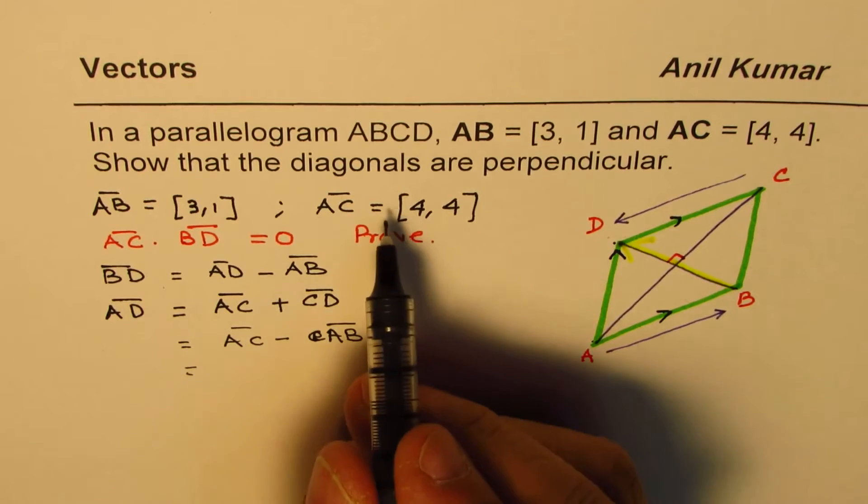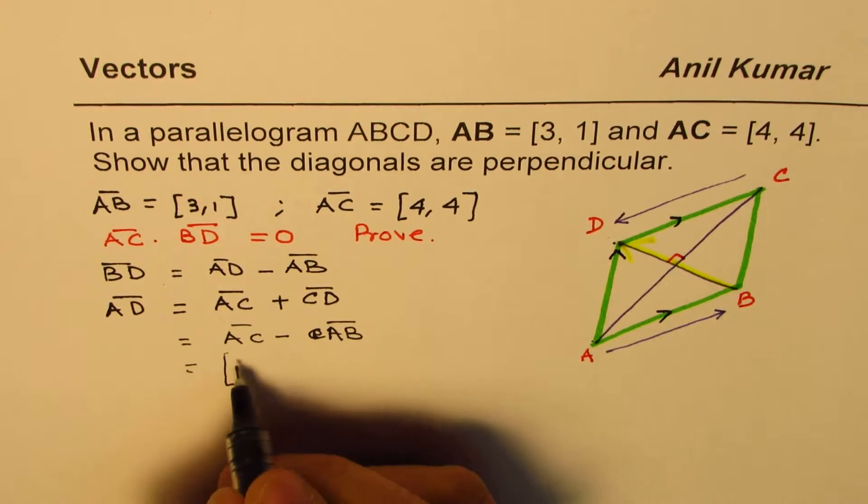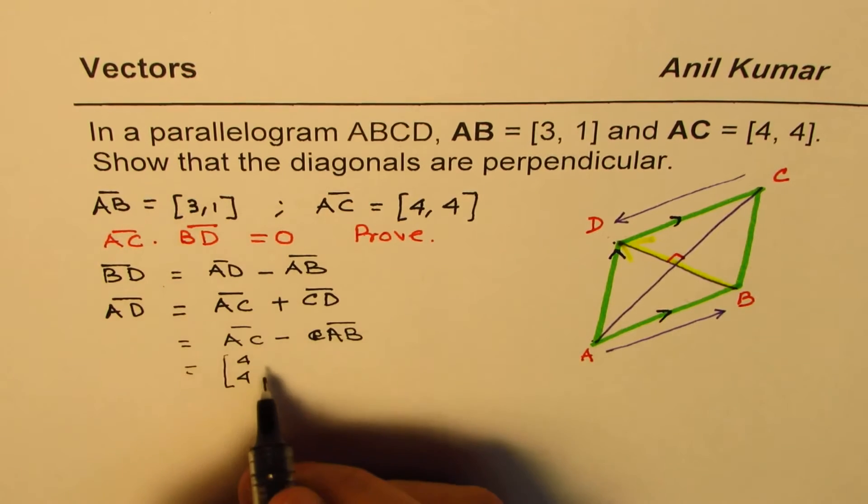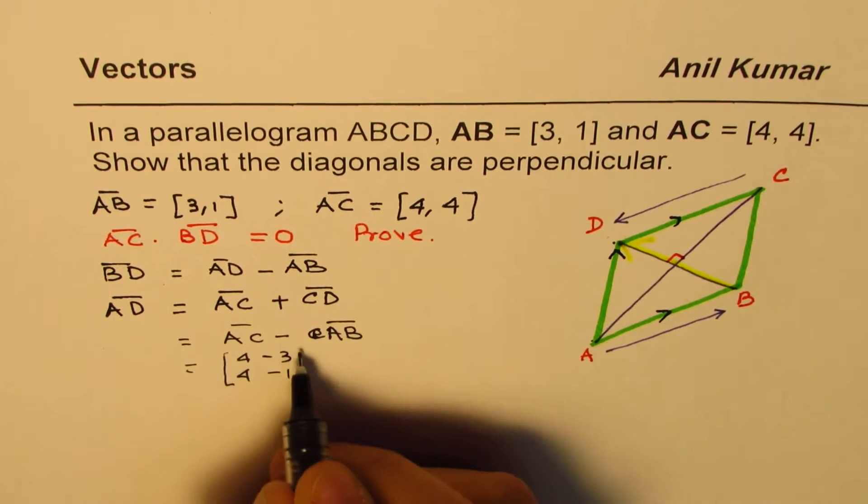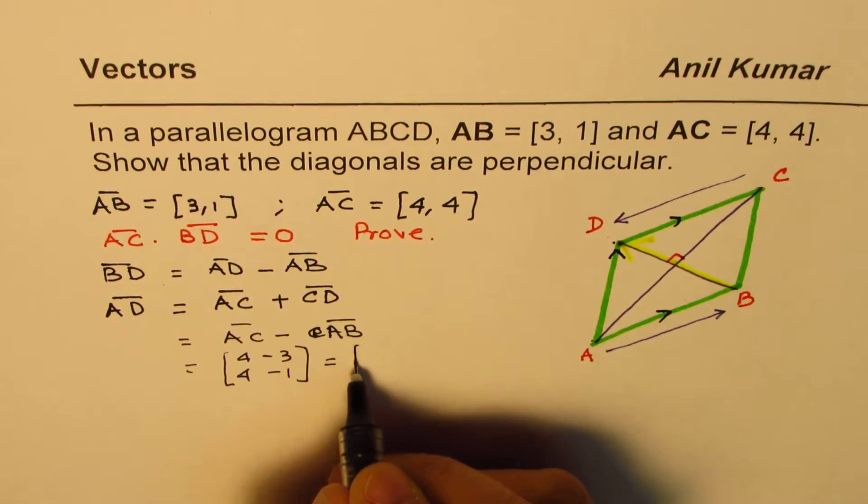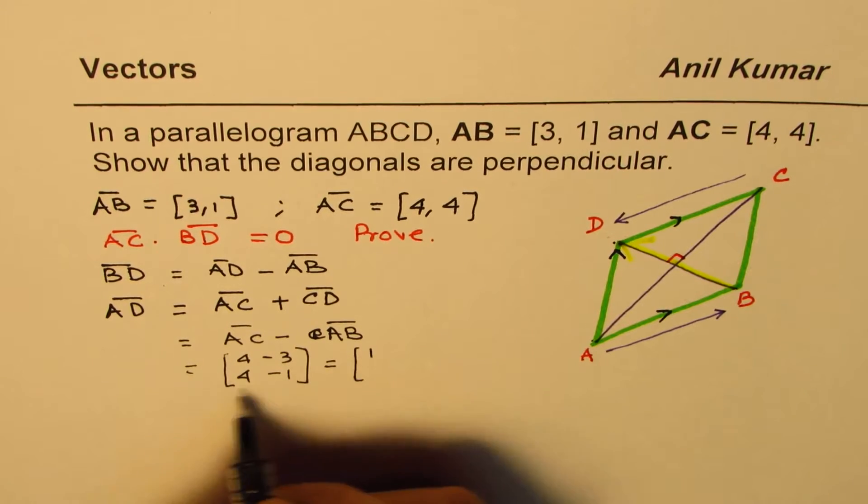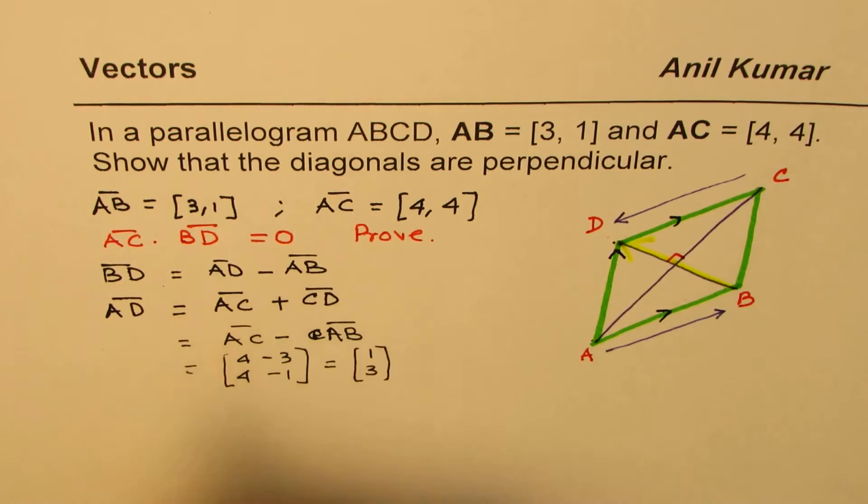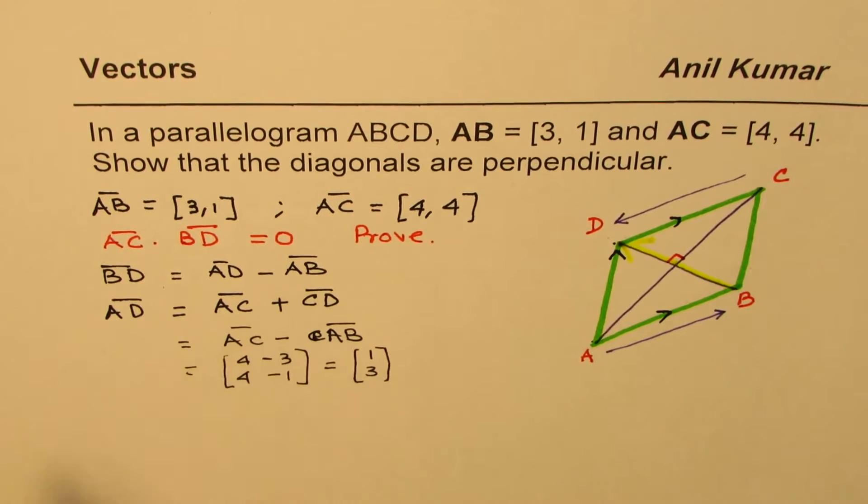So AC is [4,4] and AB is [3,1]. So we'll just take away [3,1]. So what we get here is 4 minus 3 is 1, 4 minus 1 is 3. So AD is now known to us. We already know what AB is. And therefore, we can easily find the solution.